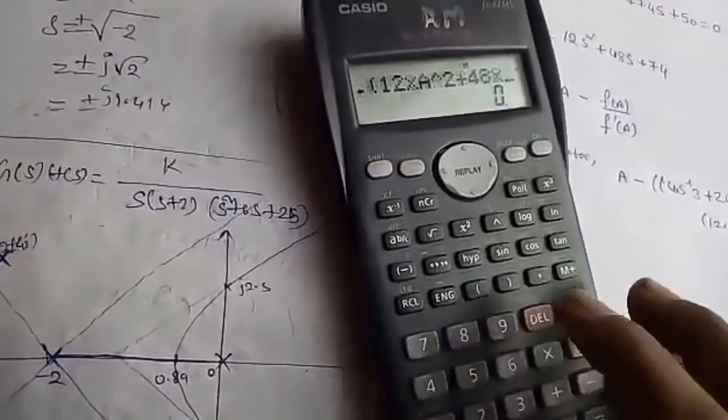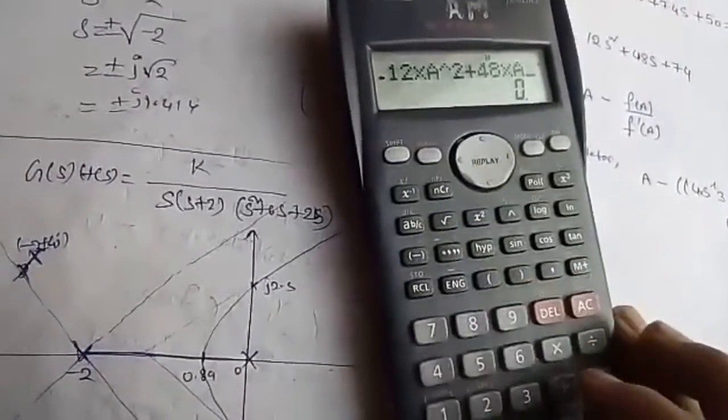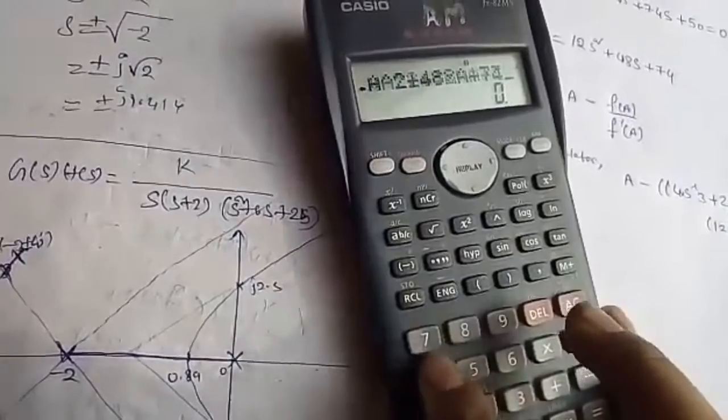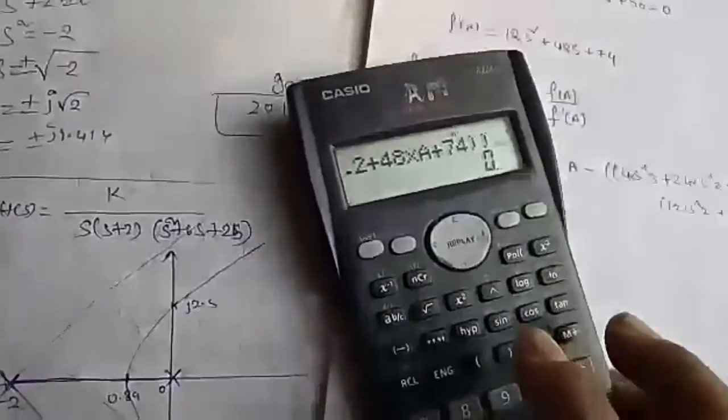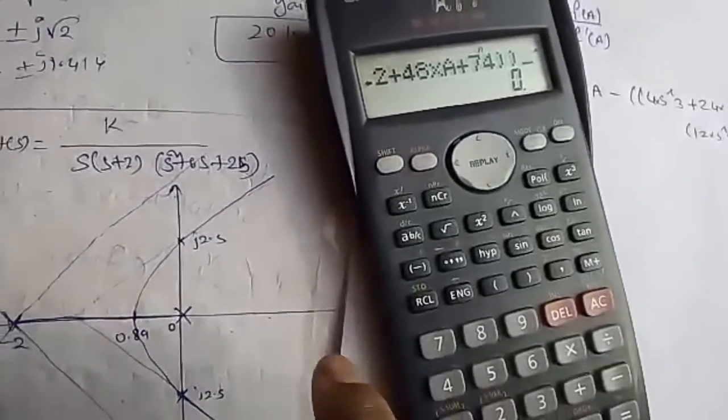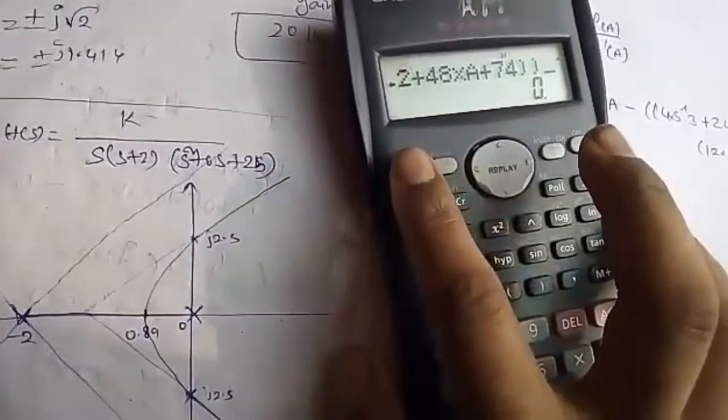Plus 74, and then double bracket closed. Now is the main process. We have set the value of A, now we have to go through the multiple steps. For that, you have to keep three buttons simultaneously: Shift, RCL, and equals.